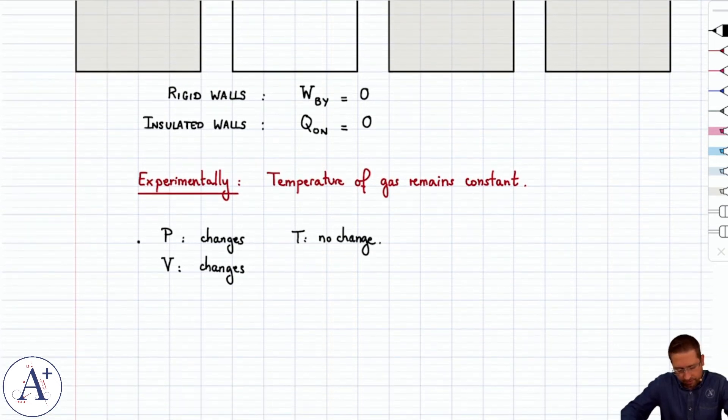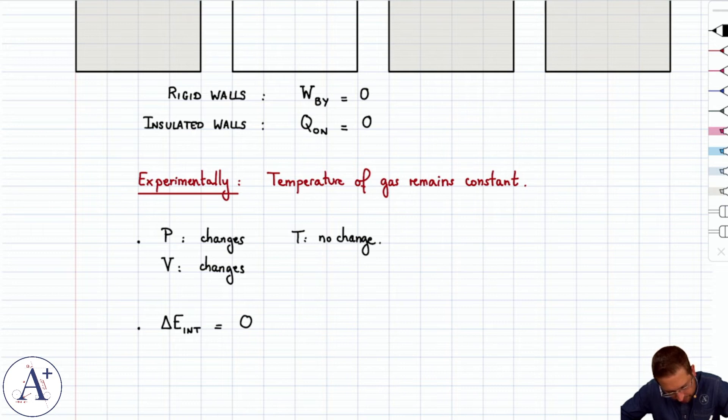In addition, if we look at the first law, which says that delta E internal is equal to Q on minus work by, well then we're going to find zero. There's no heat transfer. There's no work being done. So E internal, the internal energy does not change.